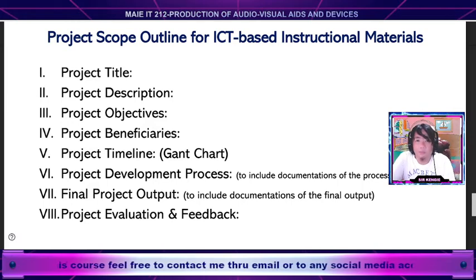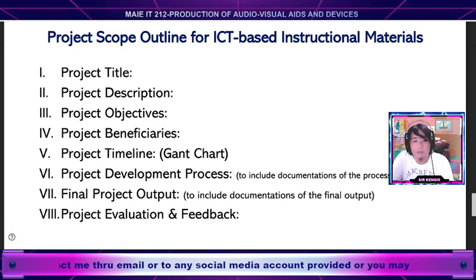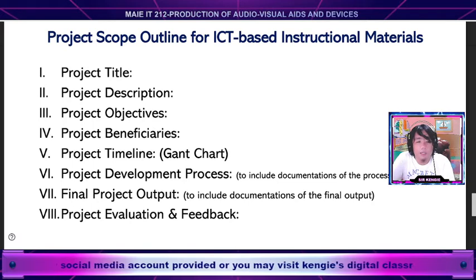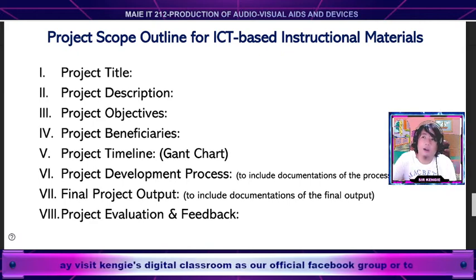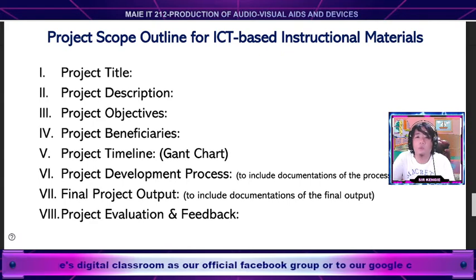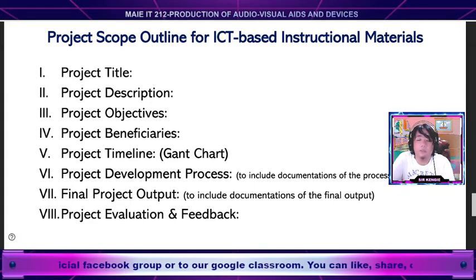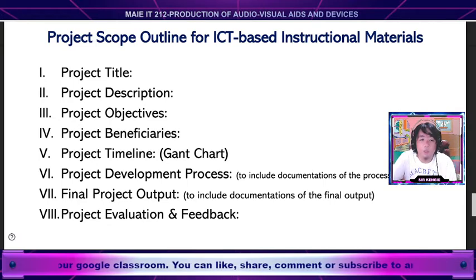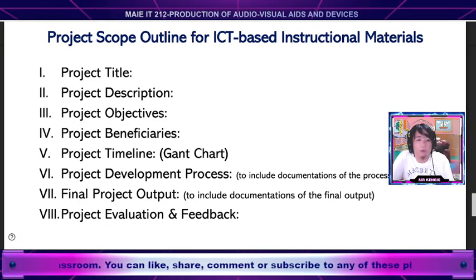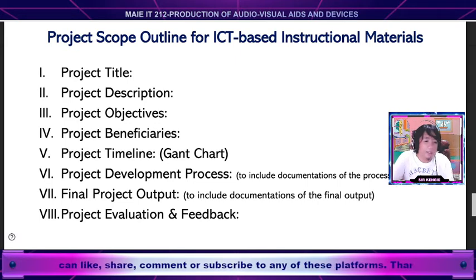The third part is your objectives — the purpose of why you want to develop this IM or material. The fourth part is the beneficiaries — who will benefit from this IM. For example, if your mock-up is intended for BESET students taking Microprocessor Systems or something similar, those are your target beneficiaries.